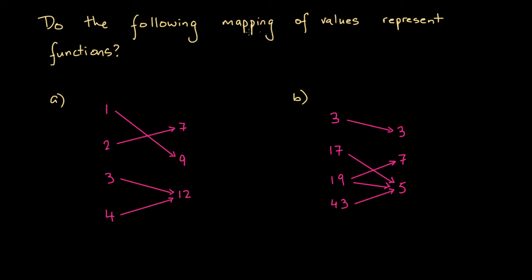Do the following mappings of values represent functions? Here we've got a and b, and in pink we've got two different mappings of values. A mapping of values takes a series of inputs and designates each one of those inputs some output.